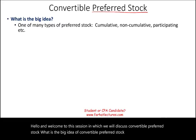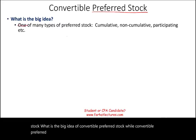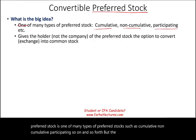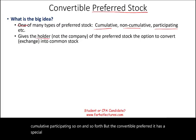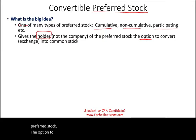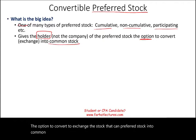Convertible preferred stock is one of many types of preferred stock, such as cumulative, non-cumulative, participating, and so on. But the convertible preferred has a special feature where it gives the holder — not the company that's issuing the preferred stock — the option to convert, to exchange the preferred stock into common stock. Simply put, switch teams from being a preferred stockholder to being a common shareholder.